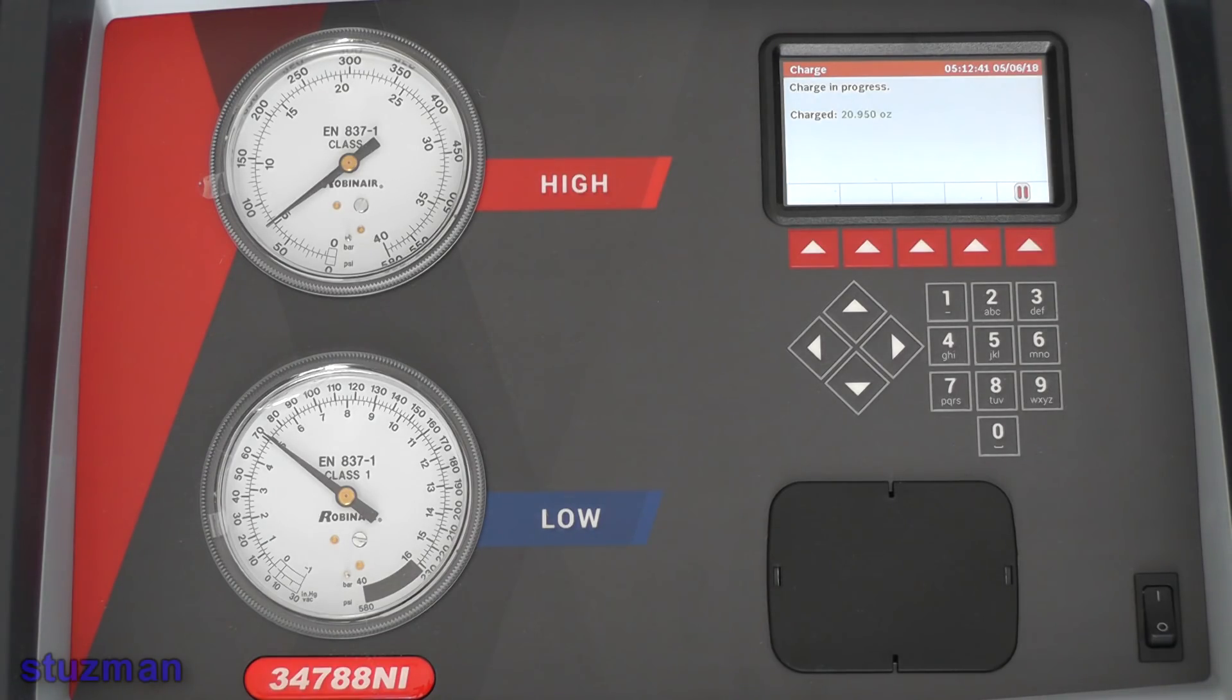Now did you notice as it gets closer and closer to the set point of 22 ounces, it will actually go ahead and start slowing down the amount of refrigerant that goes in. So it actually slows it down so we can creep right up on that set point. So now it's going to build the tank pressure so it can finish up this charge.